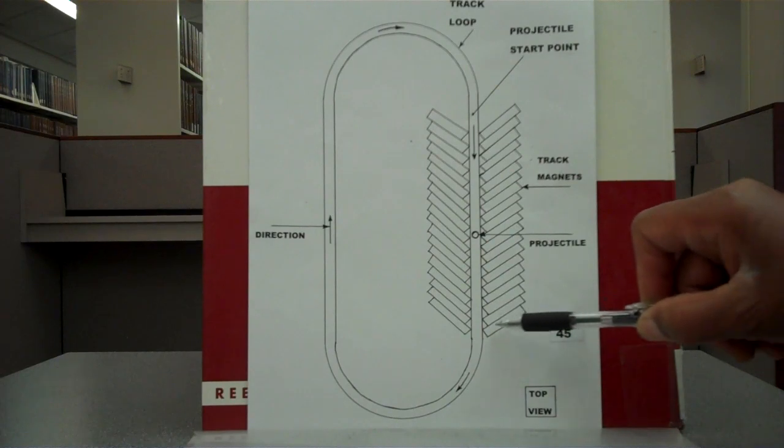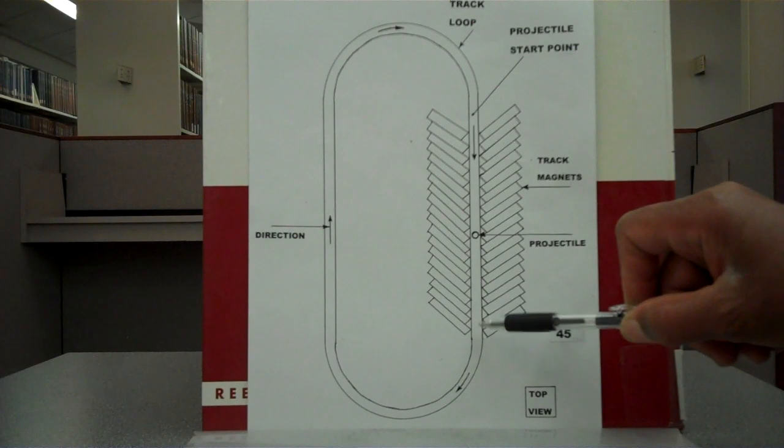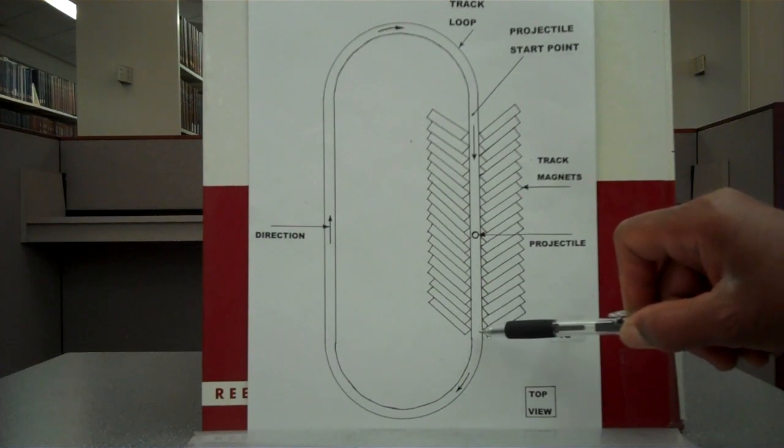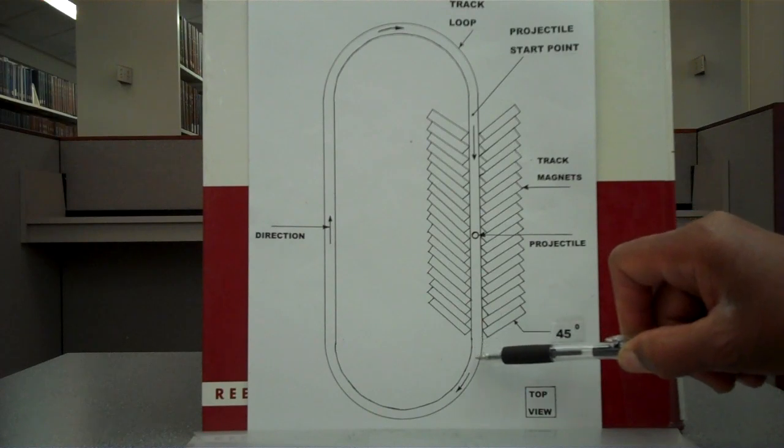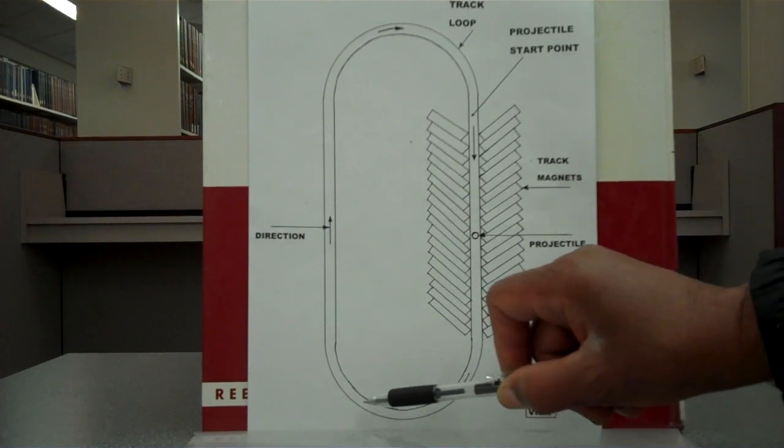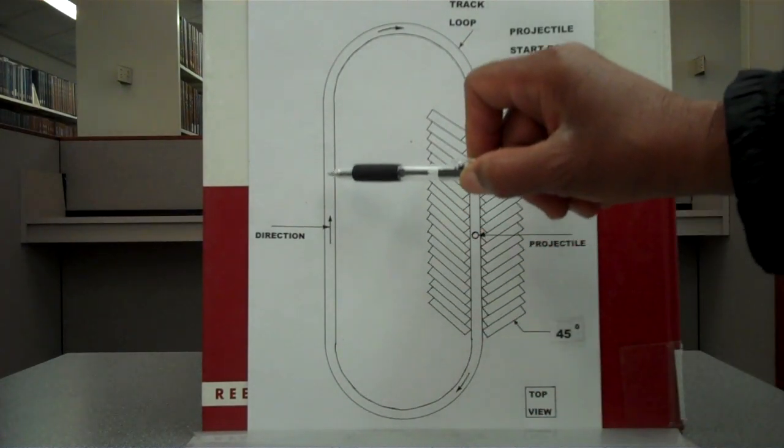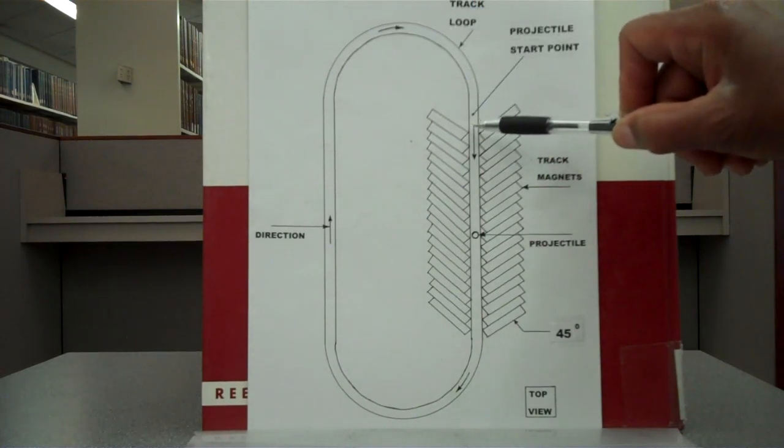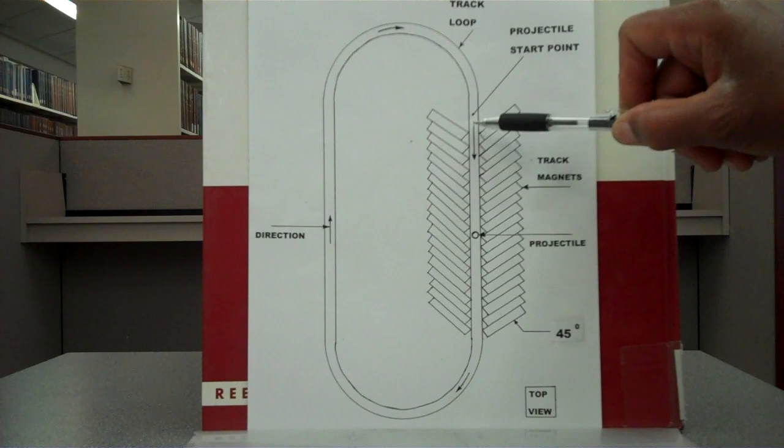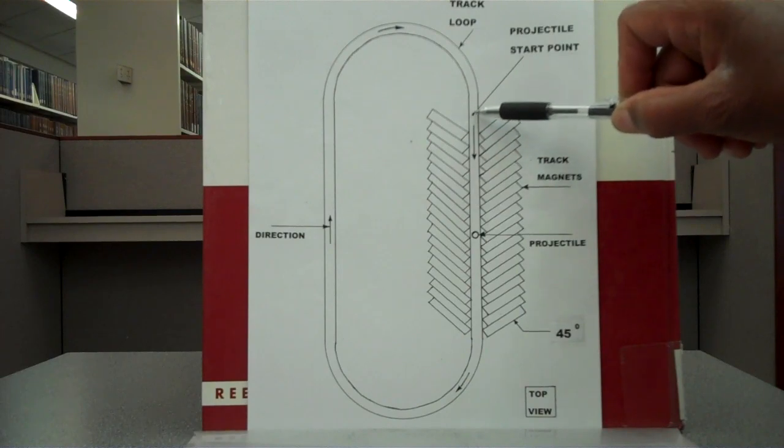The magnets are slanted at 45 degrees, and this is the top view. The projectile comes out of the magnetic accelerator, goes all the way around, and all the way back, attracted right back into the start point.